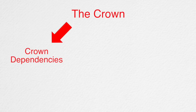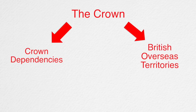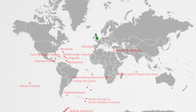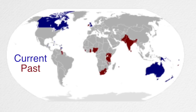Along with crown dependencies, the crown also has the British overseas territories and the Commonwealth realm. The overseas territories are outside of the UK but are a part of its sovereign territory, and the Commonwealth realm are fully independent countries that simply retain the British monarch as their monarch.